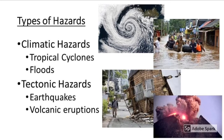A natural hazard is generally any naturally occurring event that will threaten human lives and cause damage to property. If it's related to the climate, it's classified as a climatic hazard. If it's related to tectonic action — crustal plate movement, continental or oceanic plate movement — it's classified as a tectonic hazard. Climatic hazards cover things like tropical cyclones and floods, while tectonic hazards cover earthquakes and volcanic eruptions.